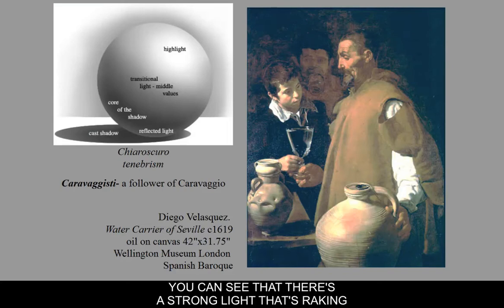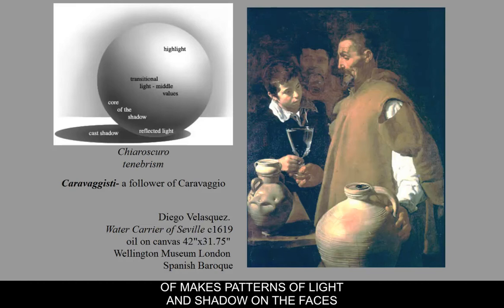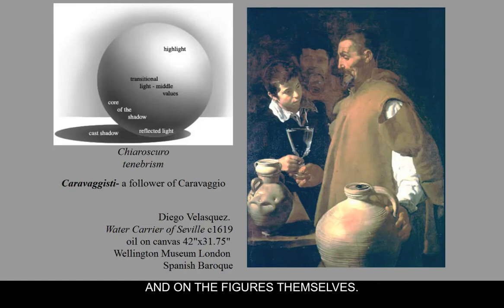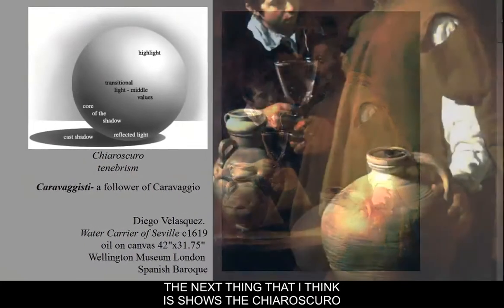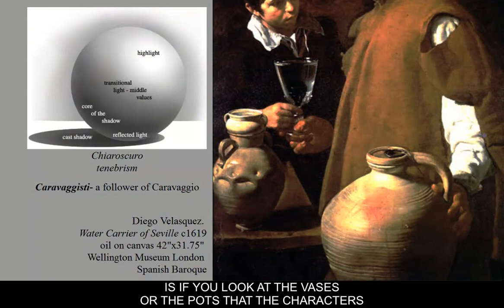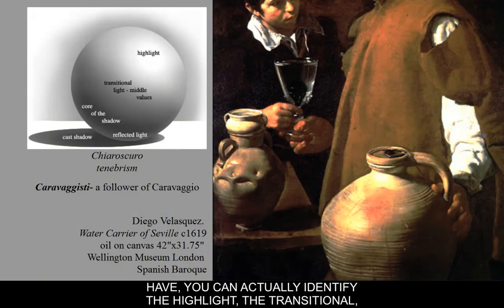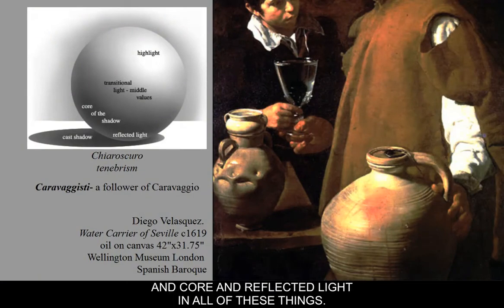You can see there's a strong light raking across this canvas, making patterns of light and shadow on the faces and figures. If you look at the vases or pots that the characters have, you can actually identify the highlight, the transitional and core, and reflected light in all of these things.